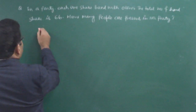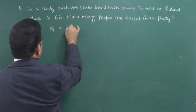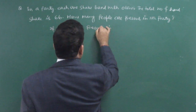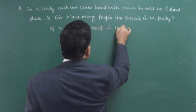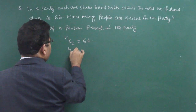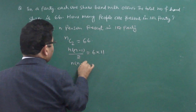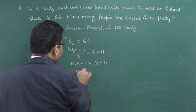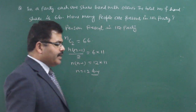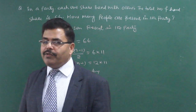So here, if there are N persons present in the party, the total number of handshakes will be NC2, and that equals 66. So N(N−1)/2 = 6 × 11, therefore N(N−1) = 12 × 11, and therefore N = 12. This is the answer.